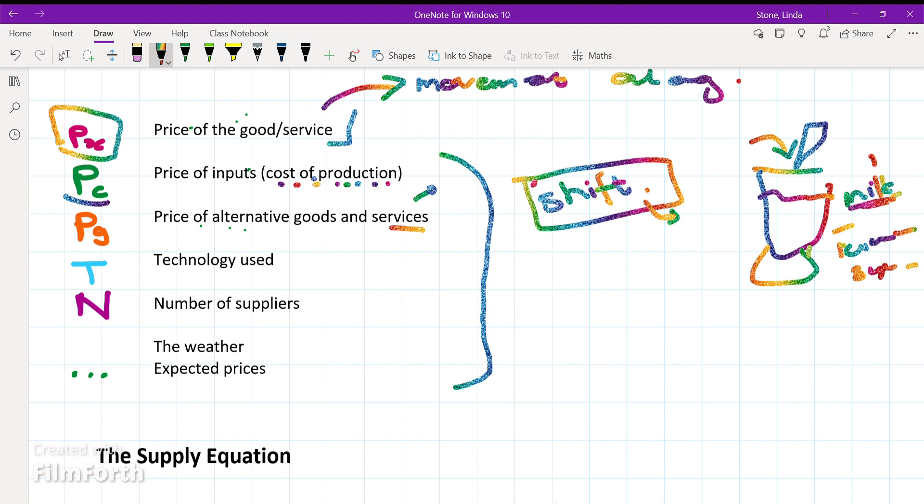A substitute is a product that I can supply or manufacture instead of the current product. I have specific resources. For instance, I might have a specific size of land to farm on and I can say, let me rather produce corn instead of chickens. This will be determined by the price of the good that I'm selling. So if the price of corn increases, then it will be more profitable.